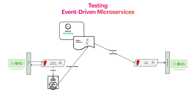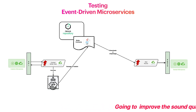Hey guys, in the previous video we implemented integration tests using a consumer-driven approach. We used Spring Cloud Contract with the help of Spring Cloud Stream Test Binder support. The tests are not actually using Kafka or even a message broker at all — the Spring Cloud Stream Test Binder provides a fake binder for Kafka instead of a real Kafka instance.